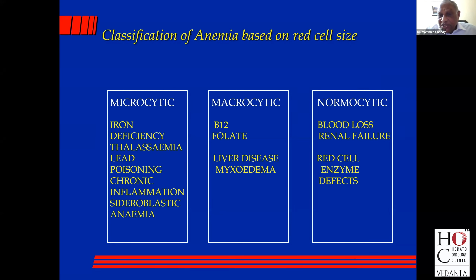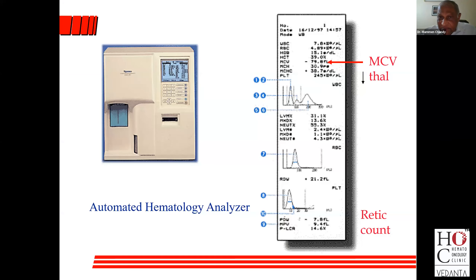In normocytic anemia, the main condition you need to think of is blood loss, but it can also occur in renal failure and in red cell enzyme defects. So essentially, the approach is based on red cell size. Today, with the advent of the Coulter counter and the availability of an accurate mean corpuscular volume, the electronic cell counters not only give you a mean corpuscular volume, they also give you a normogram of the size of the red cell.